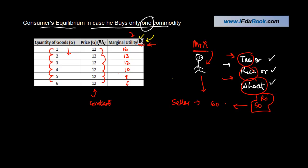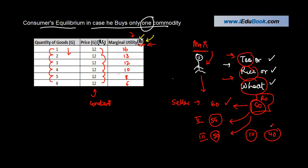If the utility he gets is worth 60 rupees, he will buy it. If the utility is 55, he will still buy it — because the utility is greater than the price he's paying. If the utility is exactly 50, he may still buy it. But if the utility is only 40, which is less than what he's paying, no rational person would buy it.